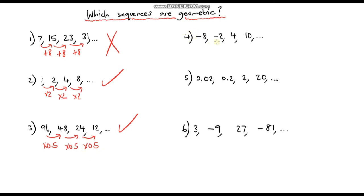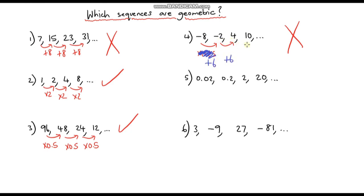Question 4: to go from negative 8 to negative 2, I'm taking a quarter — multiplying by 0.25 or dividing by 4. But I'm not doing that from negative 2 to 4. A quarter of negative 2 would give negative 0.5, not 4, so this is definitely not geometric. In fact, from negative 8 to negative 2 I'm adding 6, from negative 2 to 4 I'm adding 6, and from 4 to 10 I'm adding 6 — so this is an arithmetic sequence.